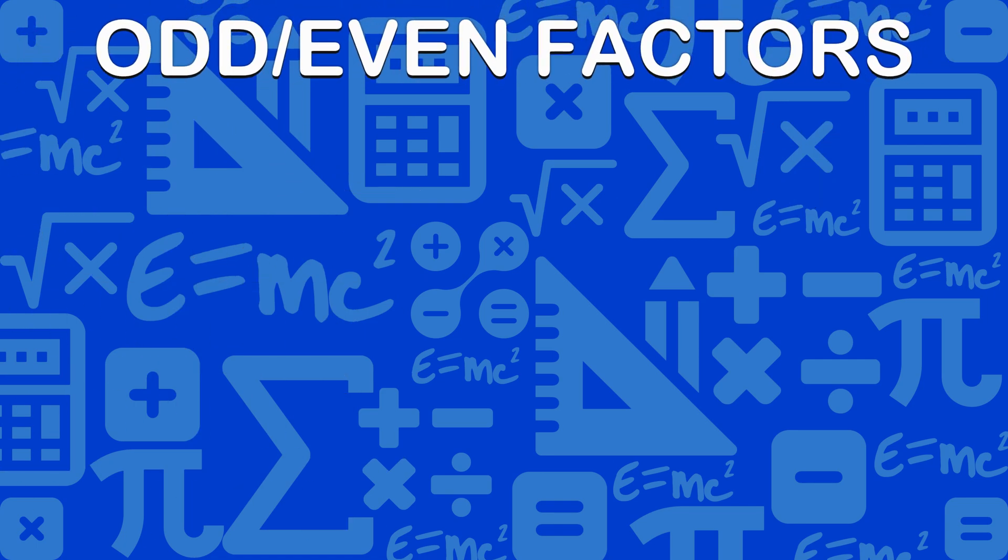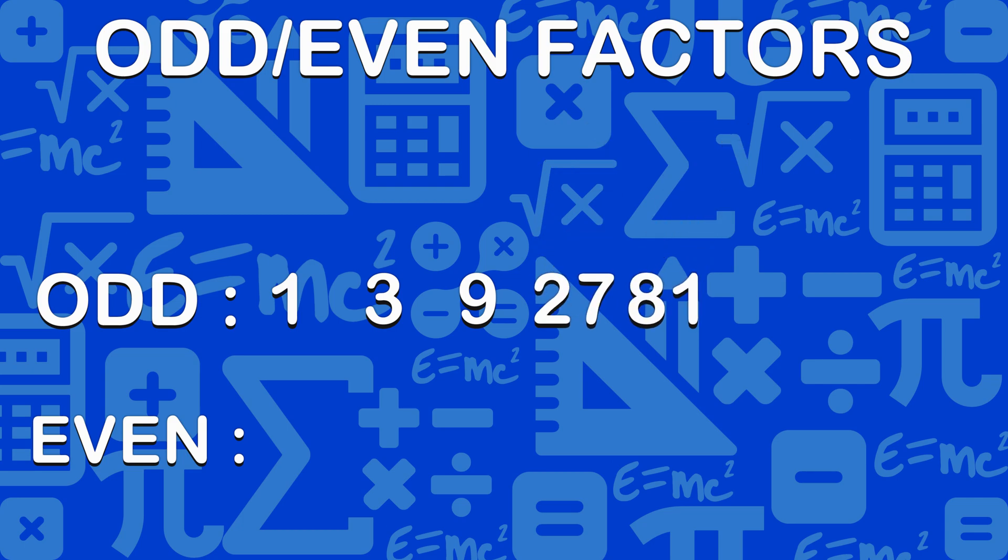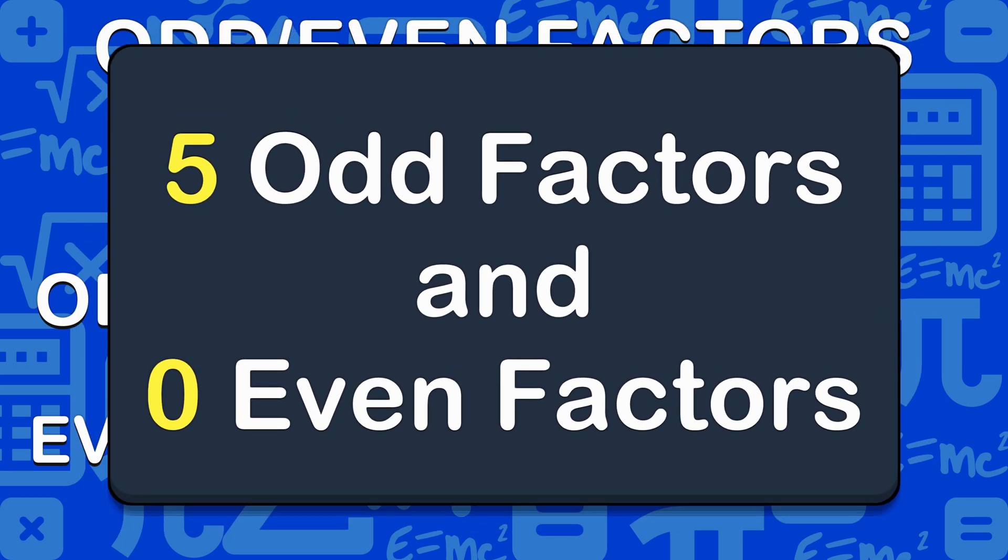Let's have a look at odd and even factors. The odd factors are 1, 3, 9, 27, and 81. There are 5 odd factors and 0 even factors.